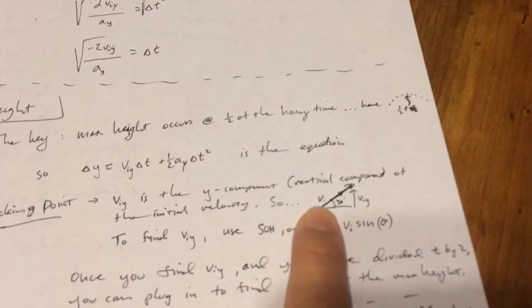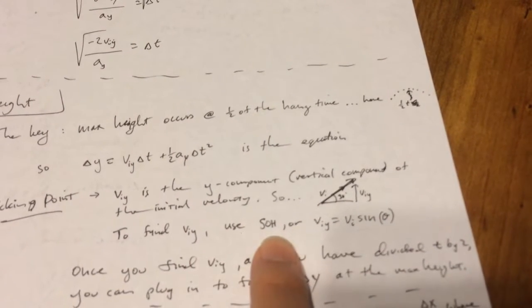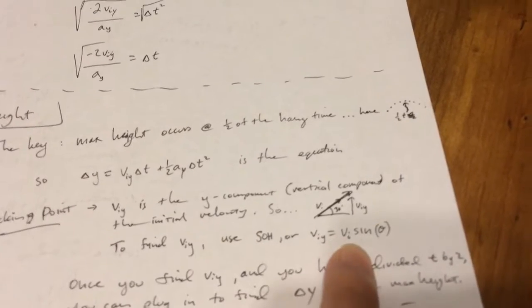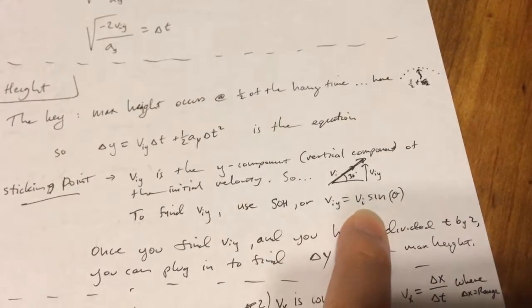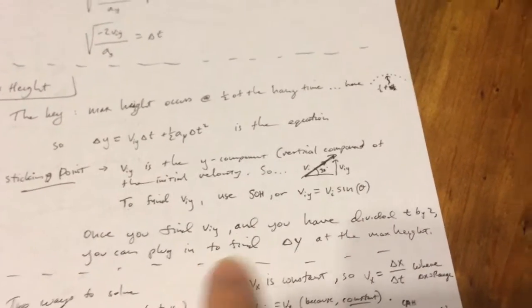If this is vi and the angle is given, you can use sine to find viy and it will look like this.